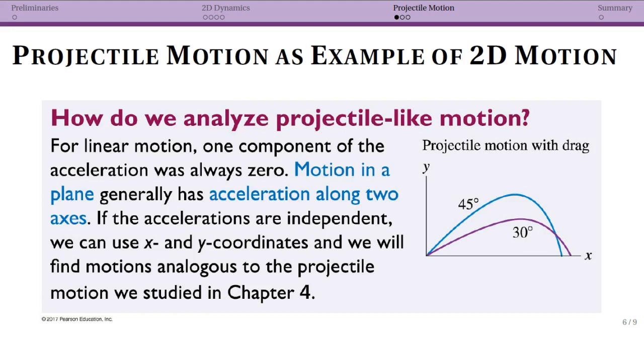Now we're going to talk about projectile motion as an example of 2D motion. We're going to make it a little more complicated by actually thinking about air resistance, because without air resistance it's actually fairly simple.